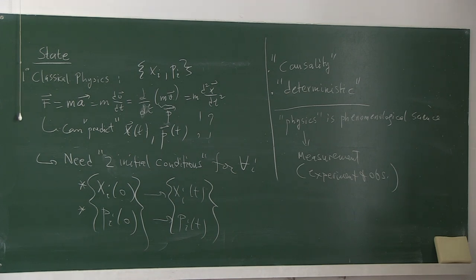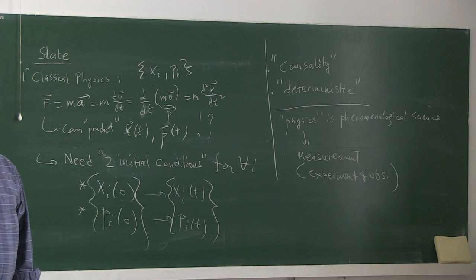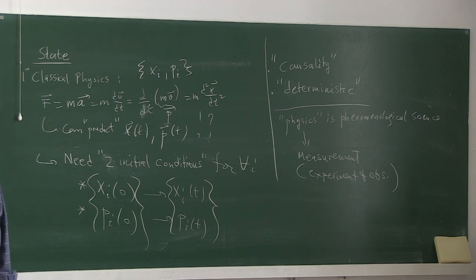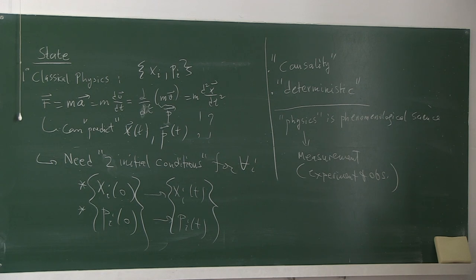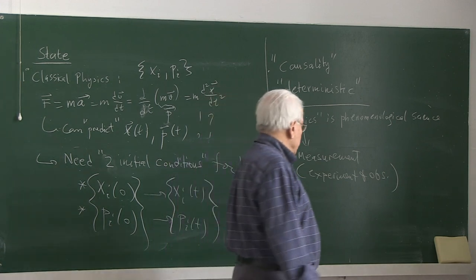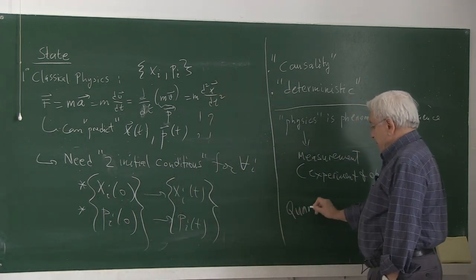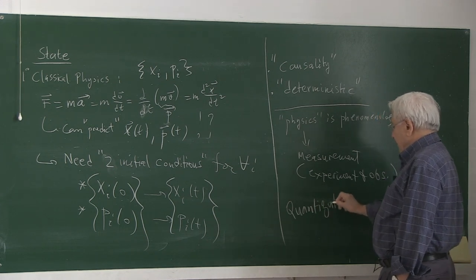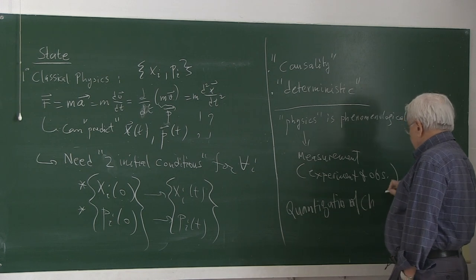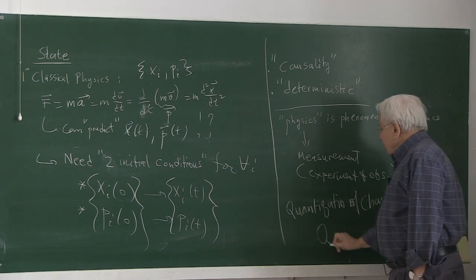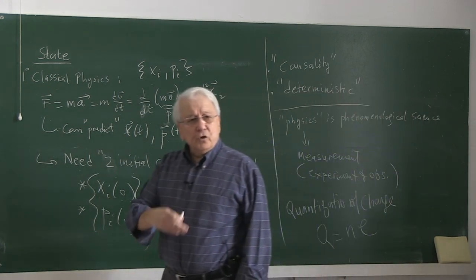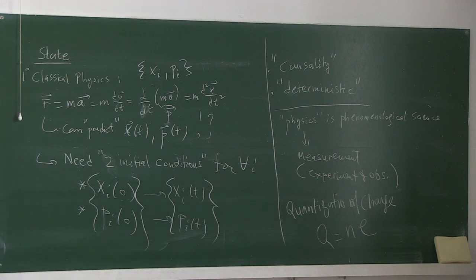Apart from statisticity, there is the quantization of some fundamental constants. The charge of all entities in the micro world comes in multiples of the electronic charge. Almost all charges are multiples of the so-called electronic charge. The electron carries that charge, the proton carries the opposite, and all other particles come in two units, three units of that charge, et cetera.